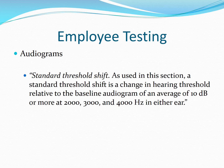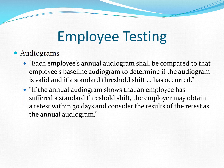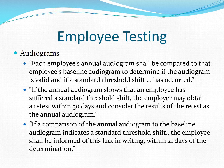When comparing audiograms, employers must be alert to the standard threshold shift. This shift is defined as the change in hearing threshold relative to the baseline audiogram of an average of 10 or more decibels at the frequencies of 2,000, 3,000, and 4,000 Hertz in either ear. Employers are required to make comparisons to determine if a standard threshold shift has occurred. If so, the employer may ask for a retest within 30 days. If the retest confirms a standard threshold shift, the employer must notify the employee in writing within 21 days.